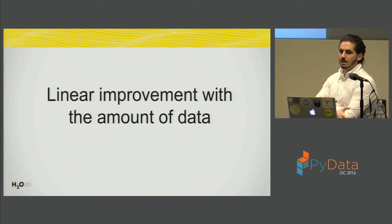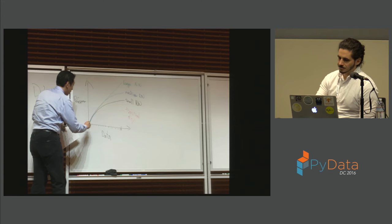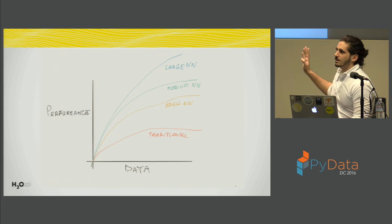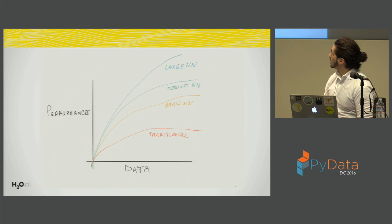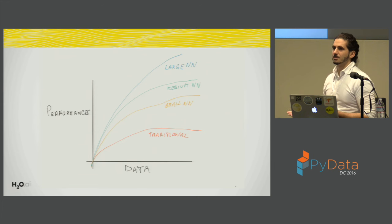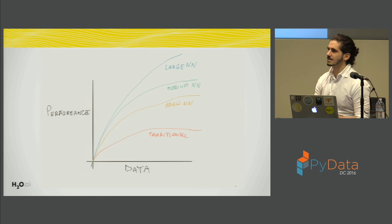The first thing is we have a linear improvement with the amount of data. He drew this graph that I tried to reproduce. With traditional algorithms, you get to some point where even adding more data doesn't help performance — you're bound to some extent. But with deep learning models, adding more data just keeps improving performance, and there's no real upper bound so far. That's what's driving a lot of the excitement.